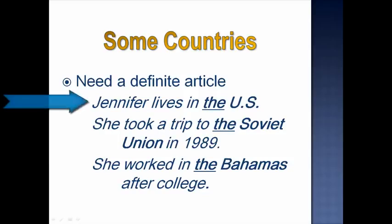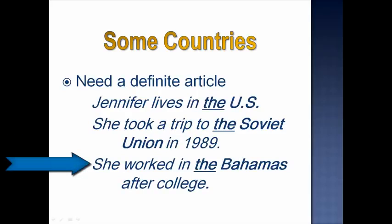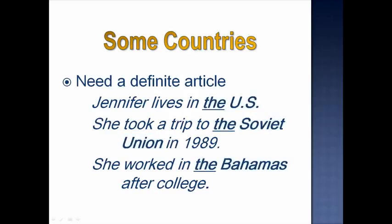Jennifer lives in the U.S. She took a trip to the Soviet Union in 1989. She worked in the Bahamas after college. United States, Soviet Union, Bahamas — these are three examples of countries that need a definite article. The general guideline is that kingdoms, republics, unions, and countries with names that are plural, like Bahamas, require a definite article.